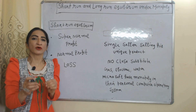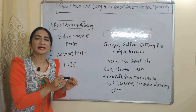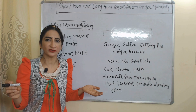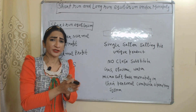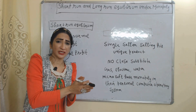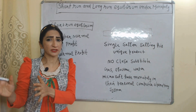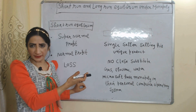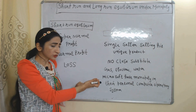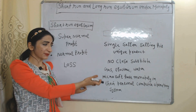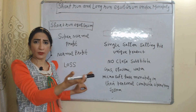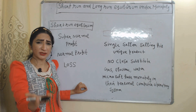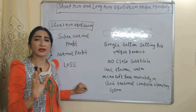Monopoly is a market condition where a single seller sells his unique product — that means his product is very unique and he doesn't have any close substitute in the market. For example, gas, electric, and water companies. Microsoft also has a monopoly in their personal computer operating system, meaning their operating system is so unique it has no close substitute.